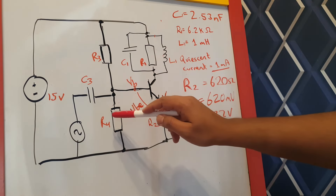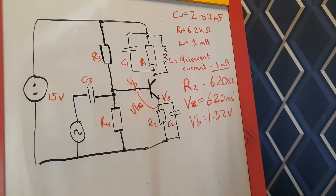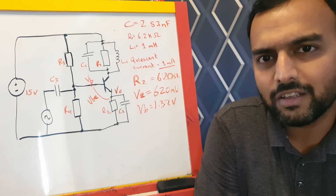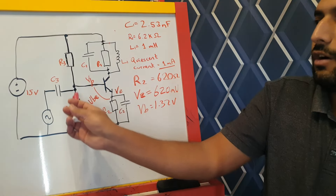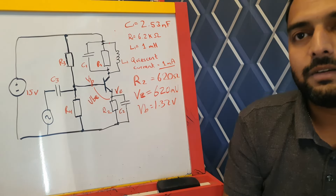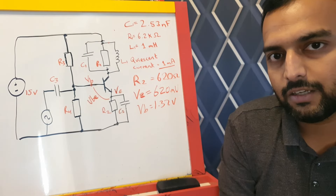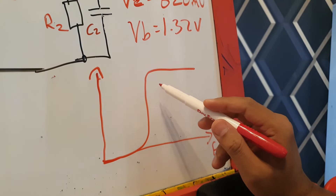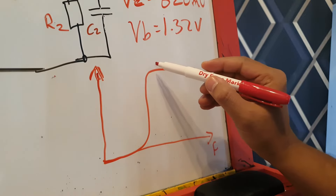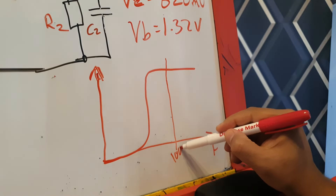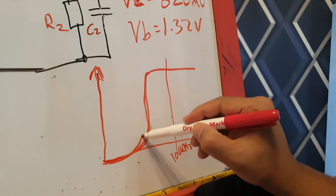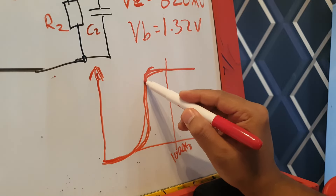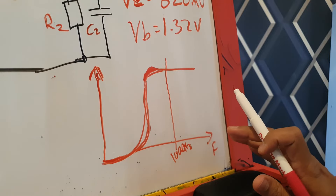With R3 and R4 fixed, we calculate C3, which forms a high-pass filter with the AC coupled input. R3 and R4 appear in parallel for the RC equation in the high-pass filter calculation. The cutoff frequency should be set so we're not attenuating 100 kilohertz — maybe 50 kilohertz would be a good value — so we don't have any roll-off at the frequency of interest. This varies depending on the application.